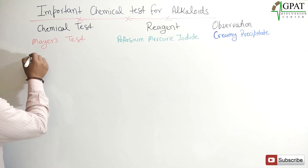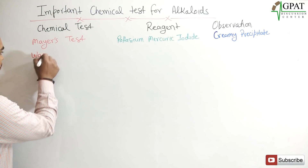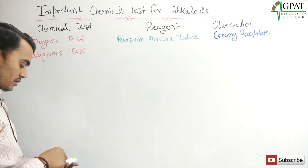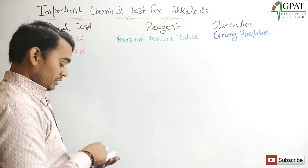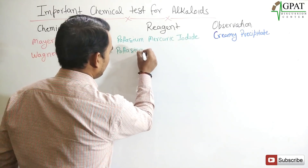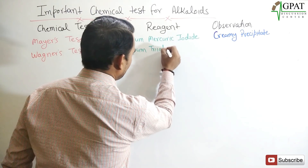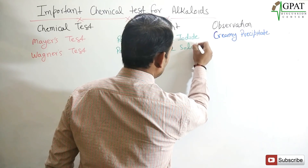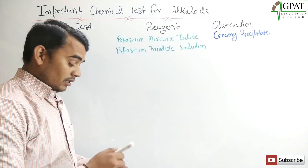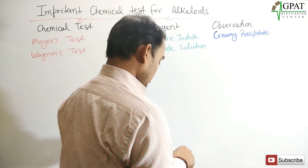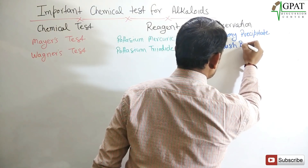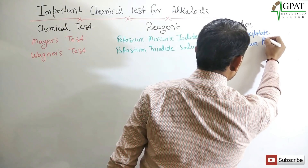The next test is Wagner's test. In Wagner's test, we use potassium tri-iodide solution. In the observation, we find a reddish-brown precipitate.